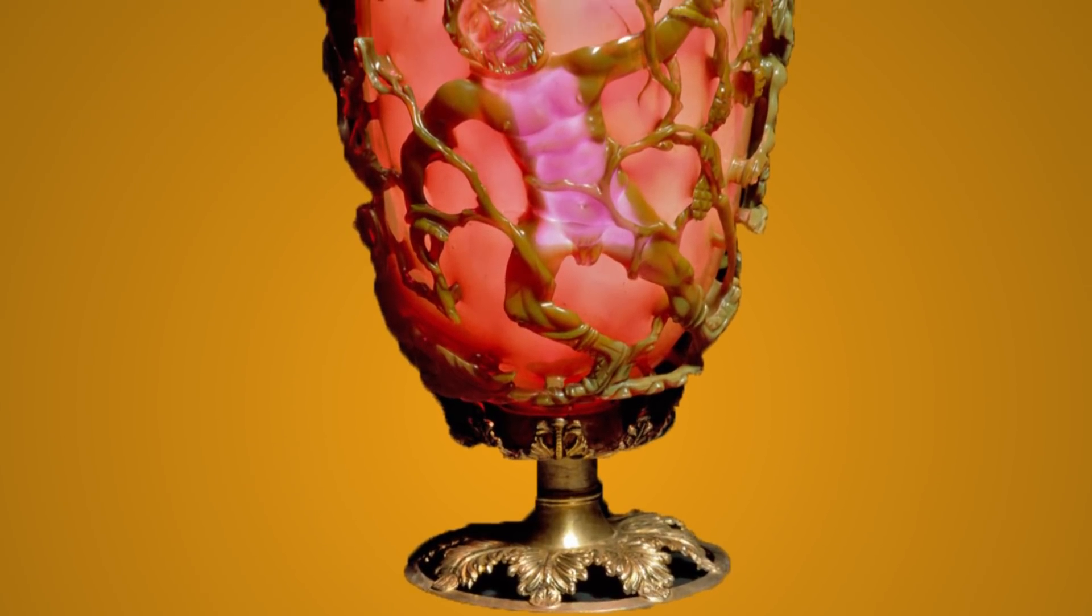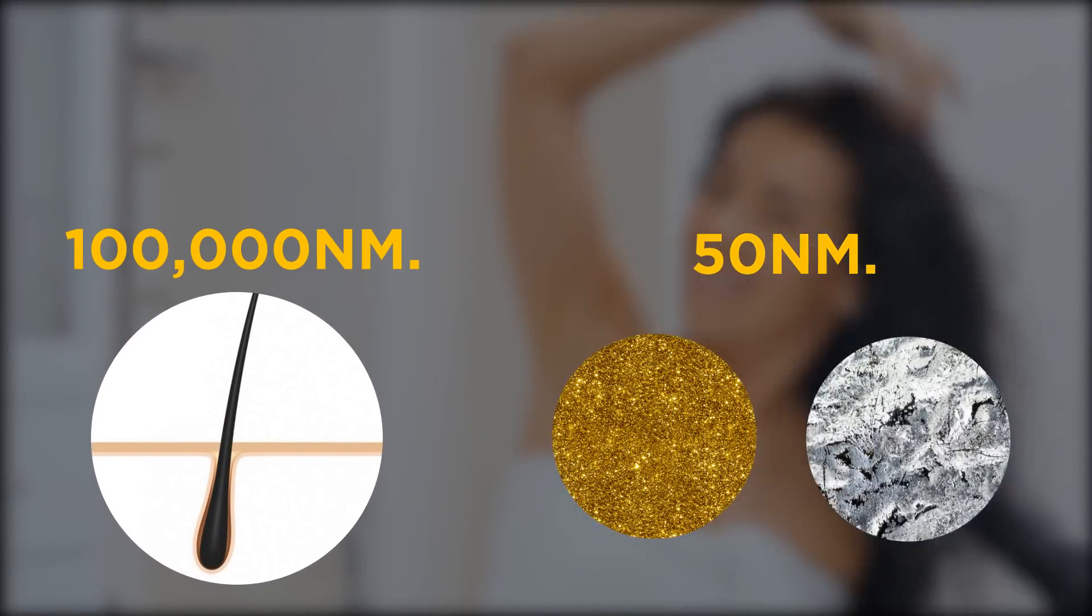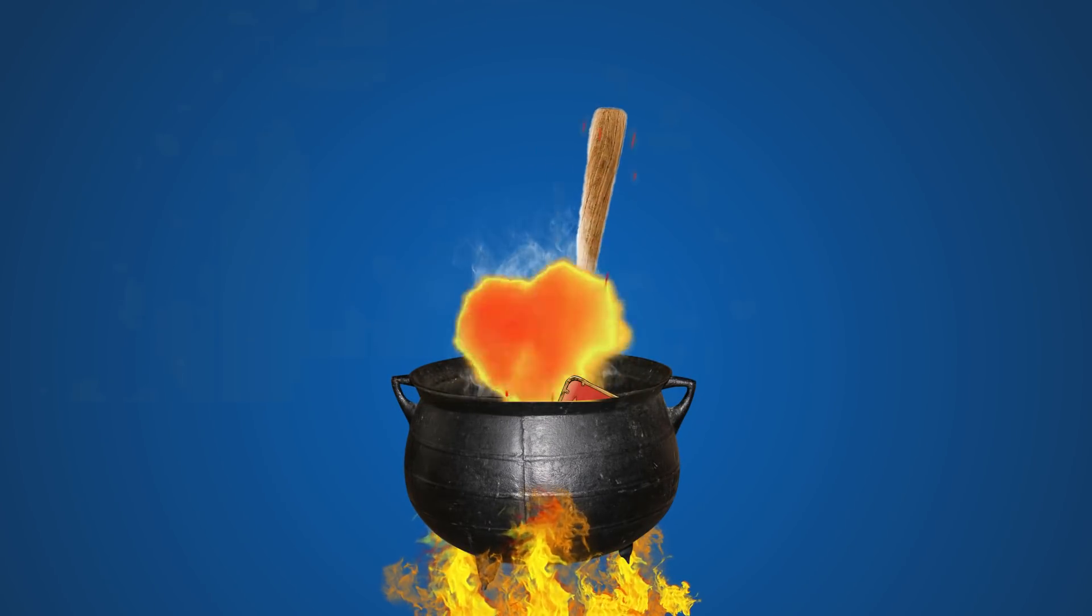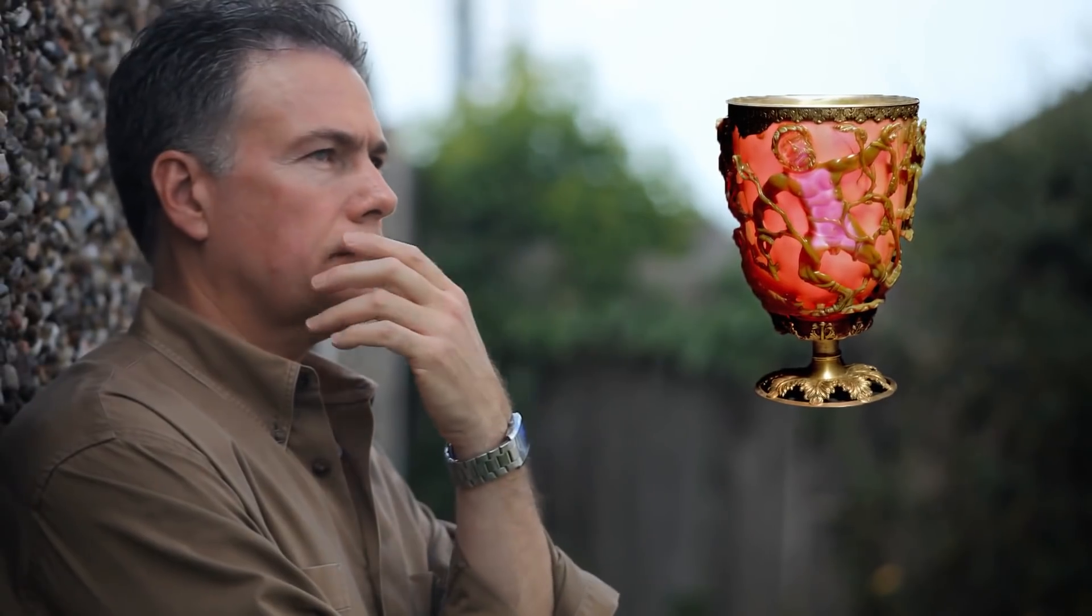The cup's ability to change colors lies in its 50 nanometer-wide silver and gold particles within the glass. To give you an idea of how small this is, a human hair is approximately 100,000 nanometers wide. It's uncertain whether the particles were somehow ground up and added to the glass mix, were added accidentally as residue on tools, or something else entirely. It's a mystery that's yet to be solved.